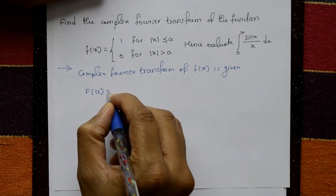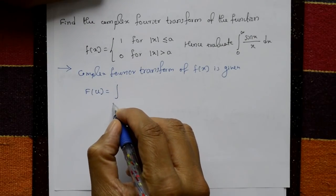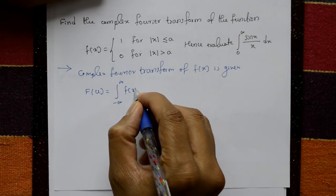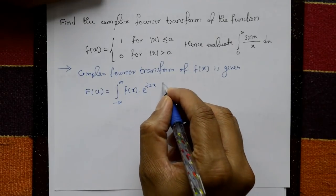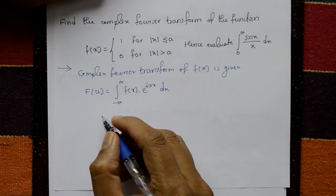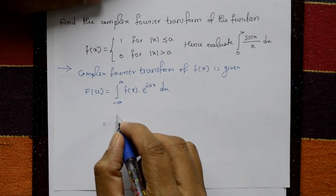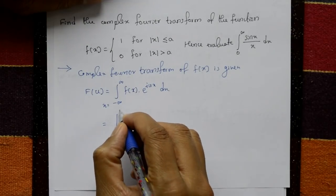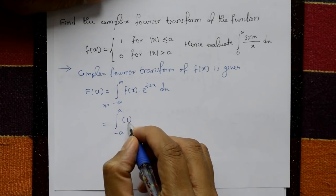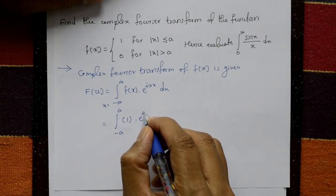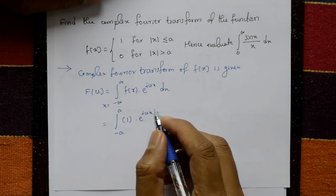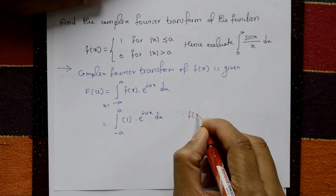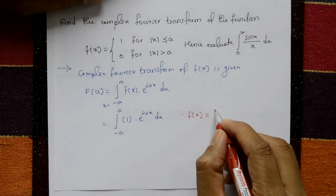The complex Fourier transform of f(x) is given by f̂(u) equals the integration from minus infinity to plus infinity of f(x) times e raised to i·u·x with respect to x. This equals the integration from minus a to plus a of 1 times e raised to i·u·x with respect to x.